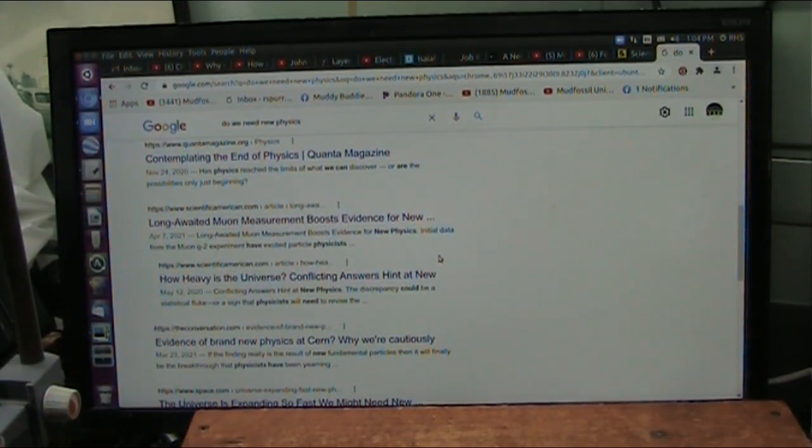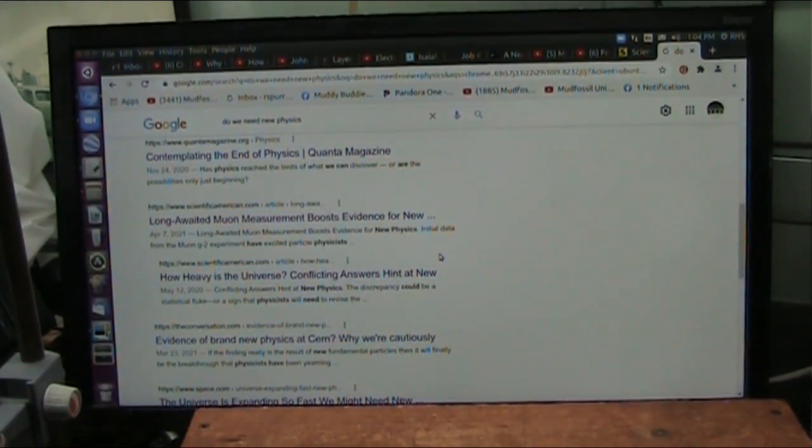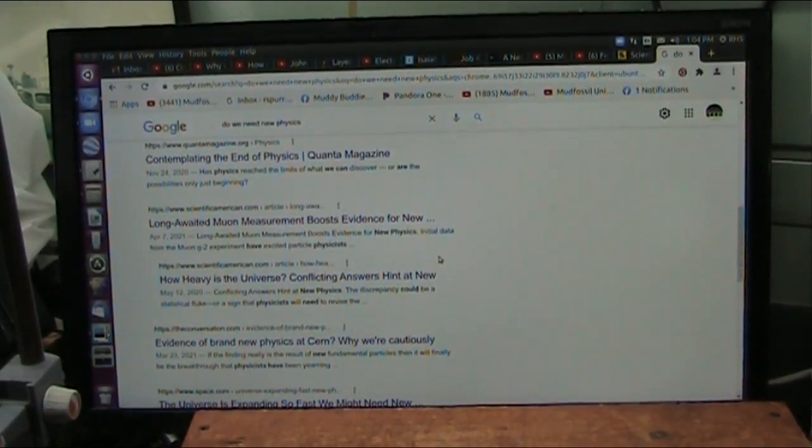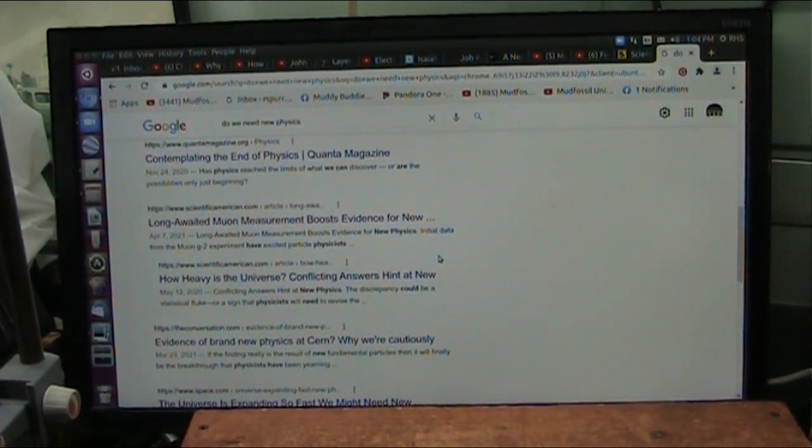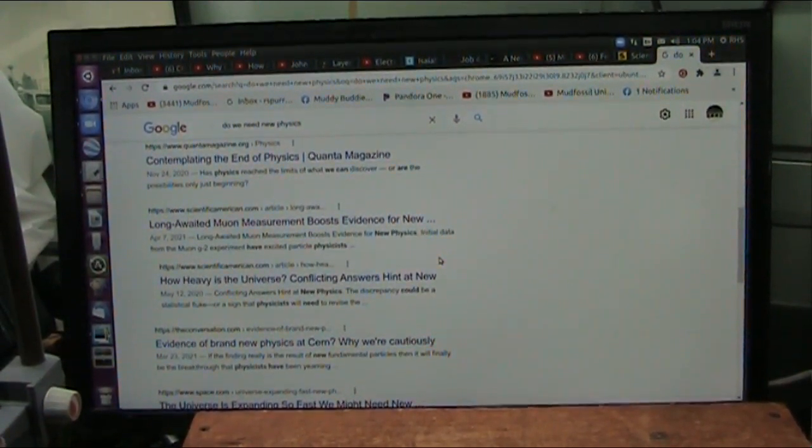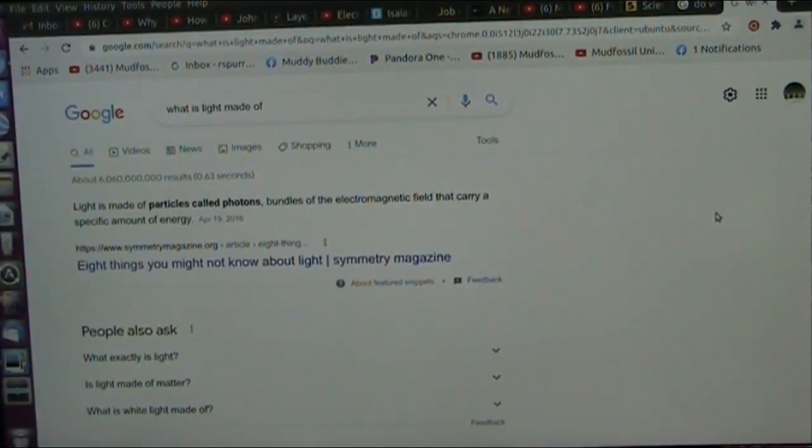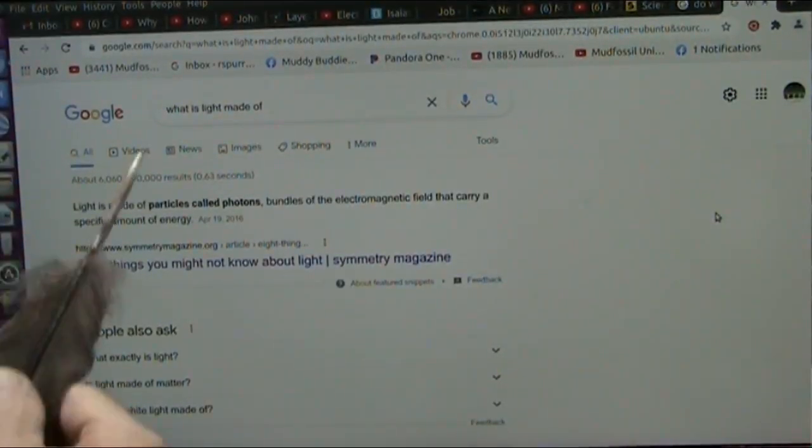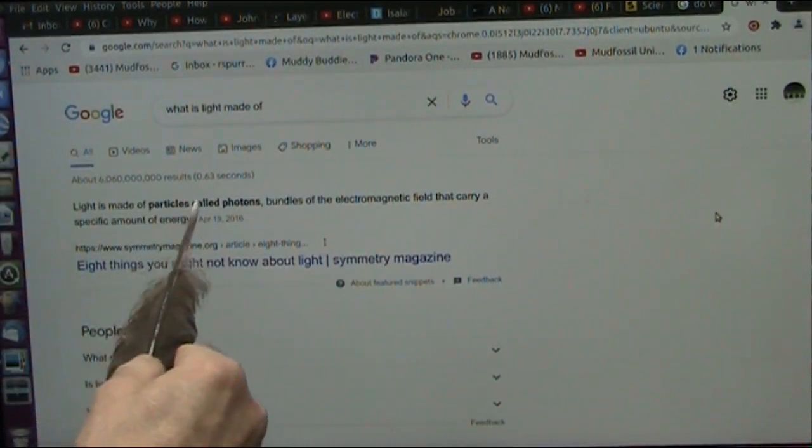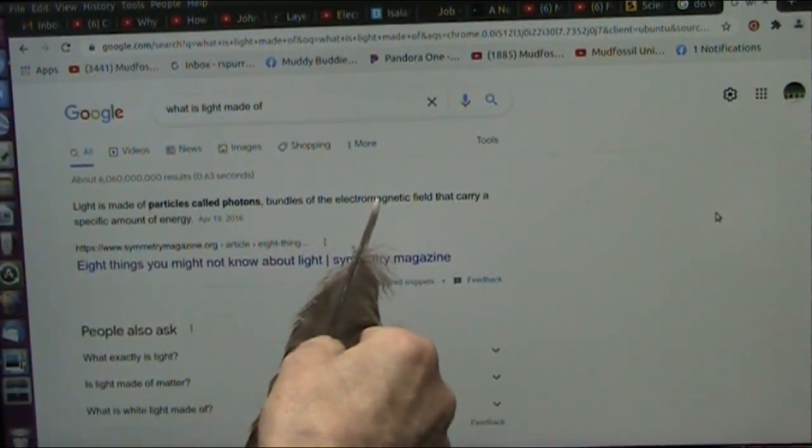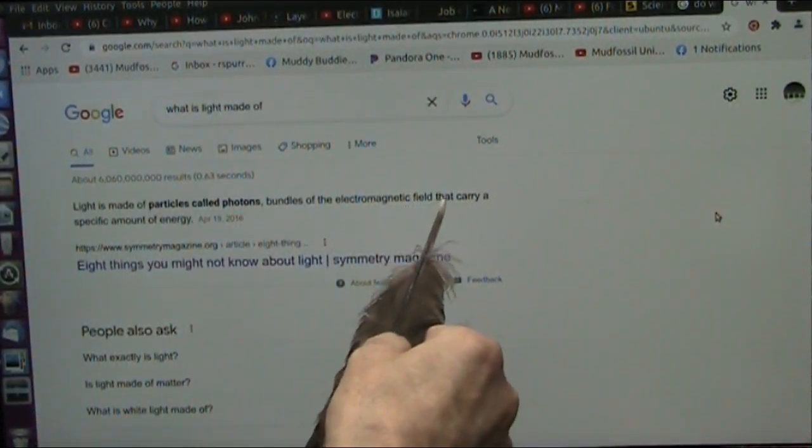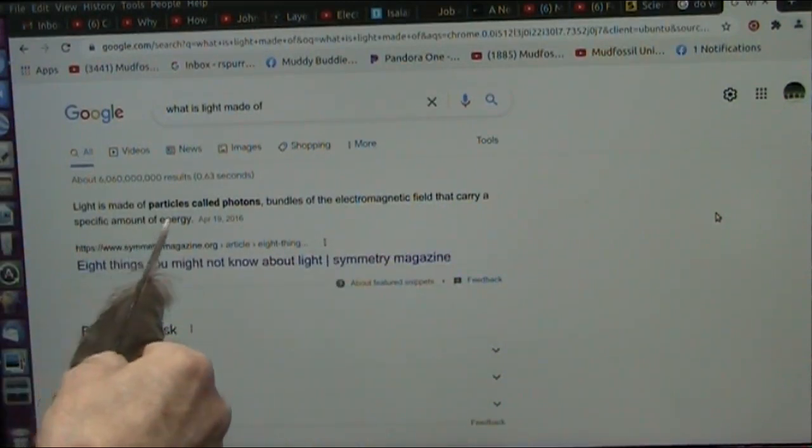They cannot find them because they're working with protons. I have started with light. Light is the smallest particle that exists. They don't even know what light is. I'm serious. Physicists have no idea what light is. Let's talk about what light is made of. It's called light is made of particles called photons, bundles of electromagnetic field that carry a specific amount of energy.